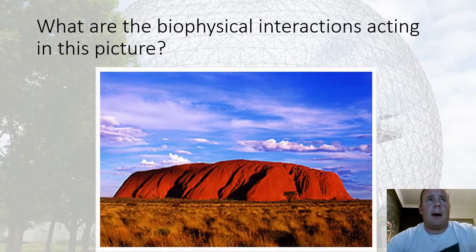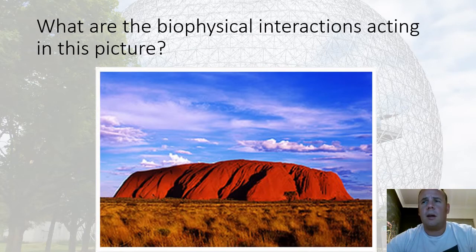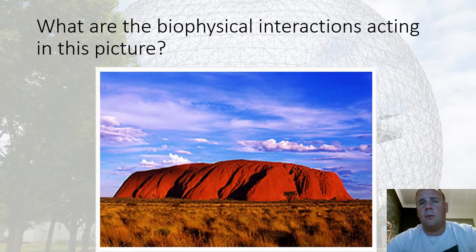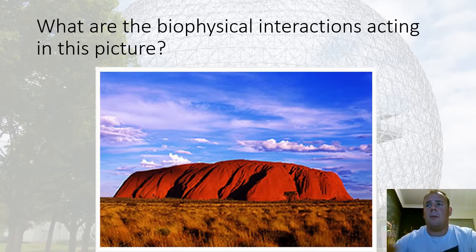This is a revision activity looking at a picture of Uluru. I want you to pause the video and write down the biophysical interactions you can see. Uluru is a rock, which represents the lithosphere; there's grass in the foreground representing the biosphere; clouds in the sky represent the hydrosphere; and the atmosphere is what allowed those clouds to form. When we look at landforms in geography we need to think about the biophysical interactions in front of us.